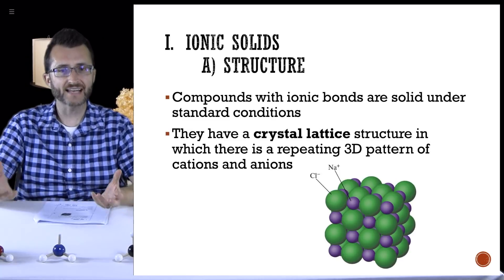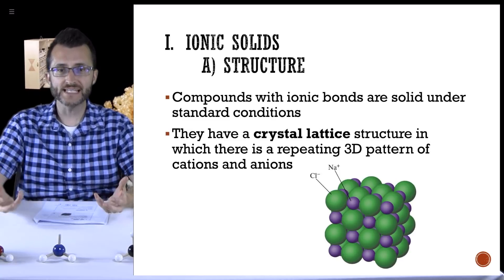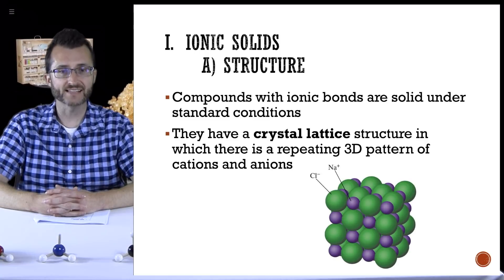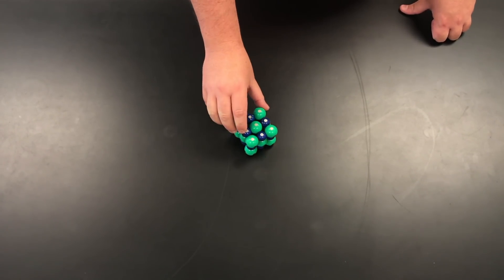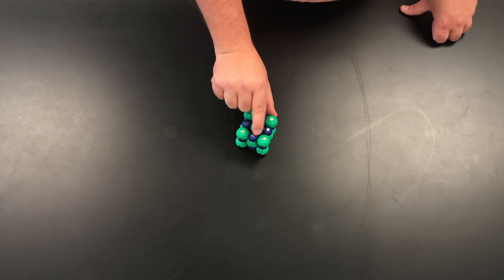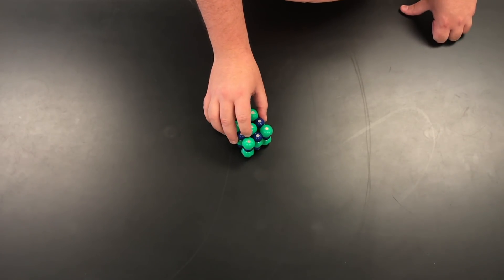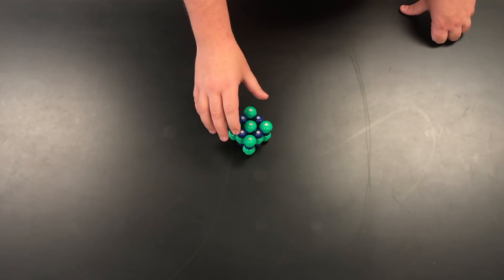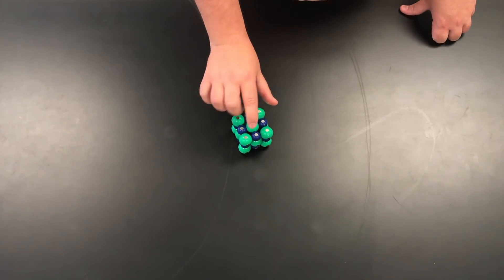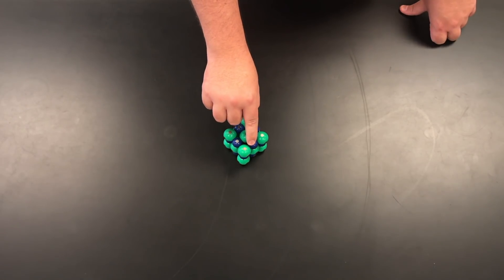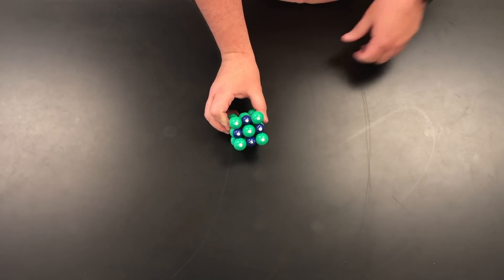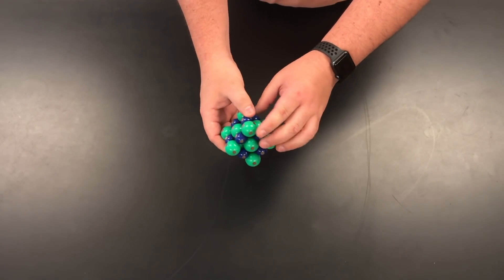They have a crystal lattice structure in which there is a repeating 3D pattern of cations and anions, as you can see in this video of us playing with toys. Here we have our crystal lattice — we can see the alternating green and blue colors. The green represents our anion that has gained an electron to become negative, and the blue represents our cation which has lost an electron to become positive. And as you can see, it's got this repeating pattern all over it.